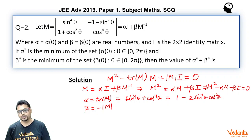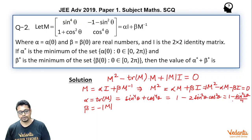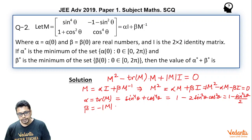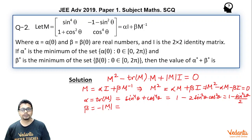So alpha equals 1 minus 2·sin²θ·cos²θ, which can also be written as 1 minus sin²(2θ)/2. Now for beta, we need the determinant of M.